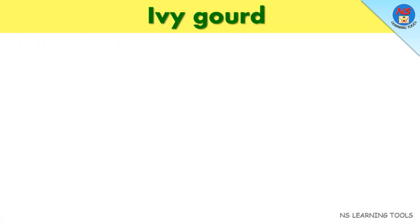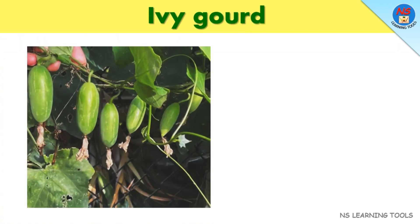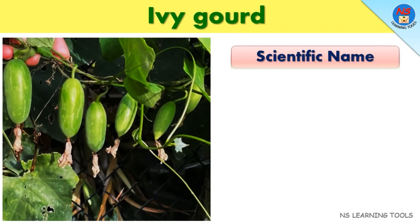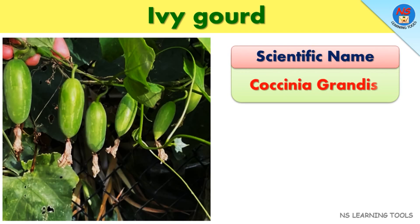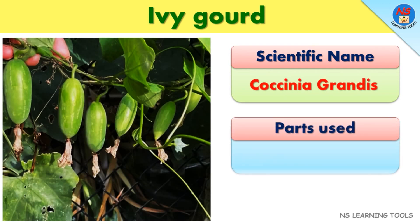Ivy gourd. Scientific name: Coccinea grandis. Parts used: Leaves, fruit, root.